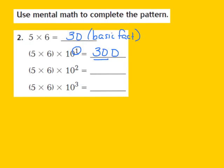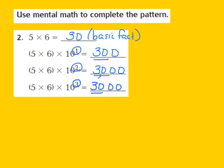For the next part in my pattern, they give me 5 times 6 times the second power of 10. My exponent is 2, so I start with the basic fact product of 30 and add two zeros, giving me 3,000. Then for the third power of 10, my exponent is a 3, so I write down 30 and add three zeros — 1, 2, 3 — place my comma, and that turns out to be 30,000. So I've now used my basic fact and a pattern to find the product.